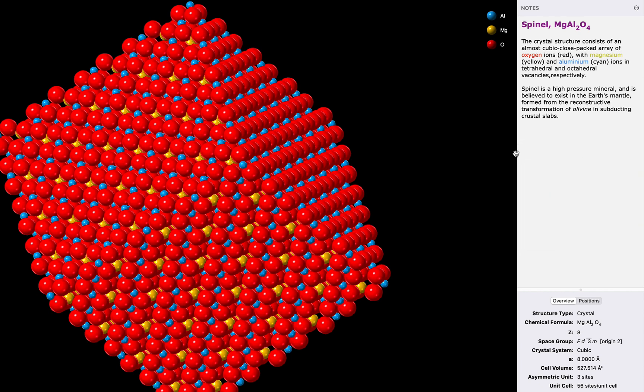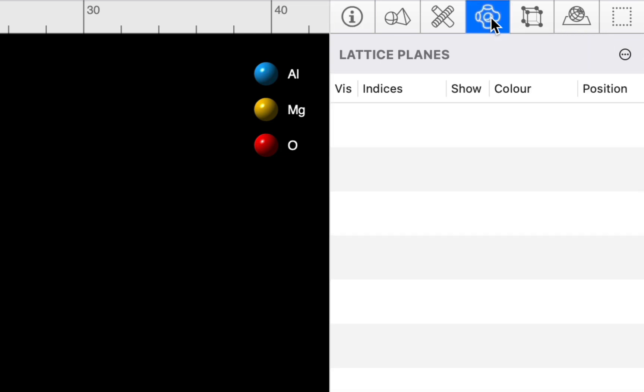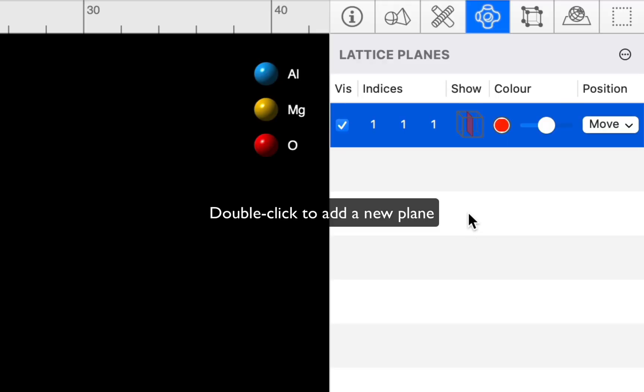Next we'll display a lattice plane parallel to the surface we want to show. We'll navigate to the lattice planes group in the inspector, and in version 10 you'll find it under the volume tab. We can add a new lattice plane by double clicking in the list. This gives us a default orientation of 111, which is actually the orientation we want. I'm going to change the color and opacity to make the plane stand out better.